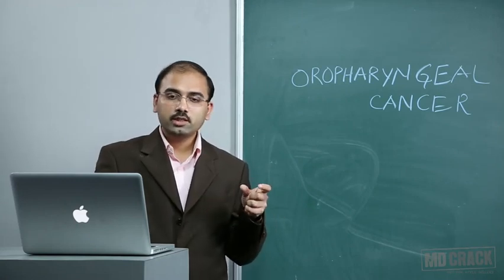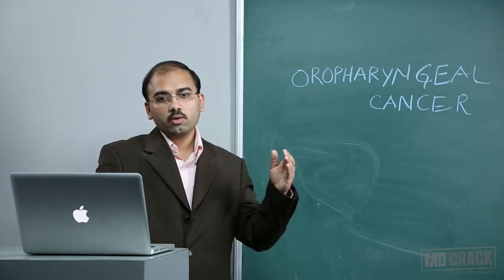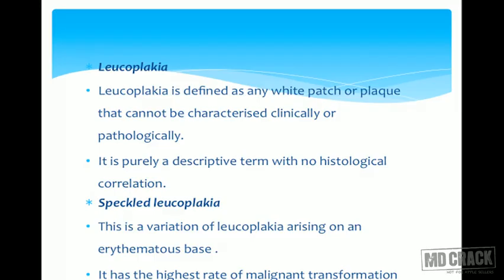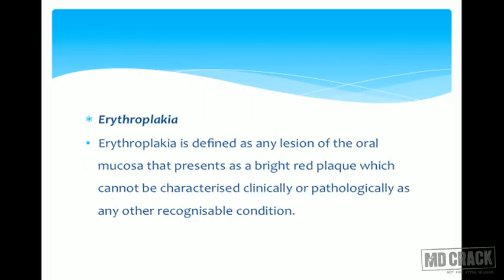Speckled leukoplakia has the highest rate of malignant transformation. If you are asked which lesion has the highest rate of malignant transformation in the oral cavity, the answer is speckled leukoplakia — not plain leukoplakia. Erythroplakia is defined as a lesion of the oral mucosa that presents as a bright red plaque which cannot be characterized clinically or pathologically as any other recognizable condition.